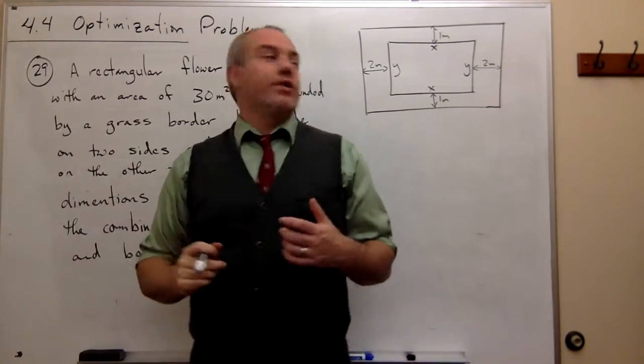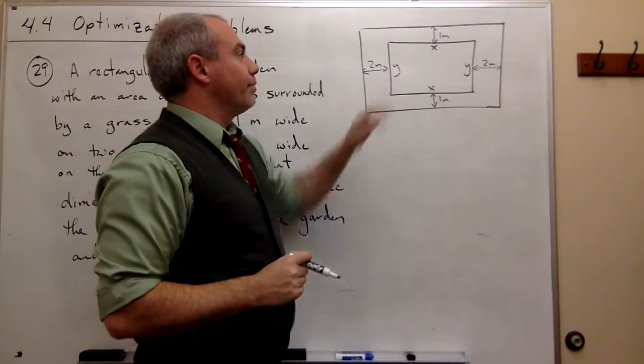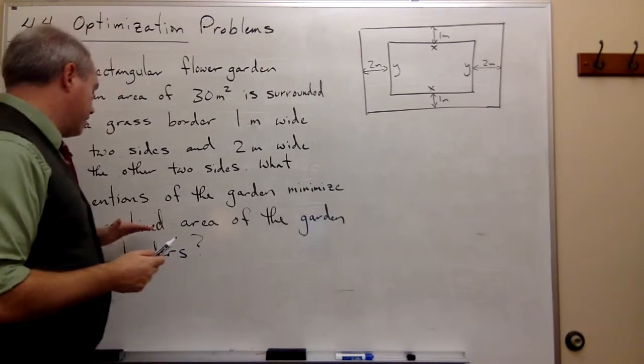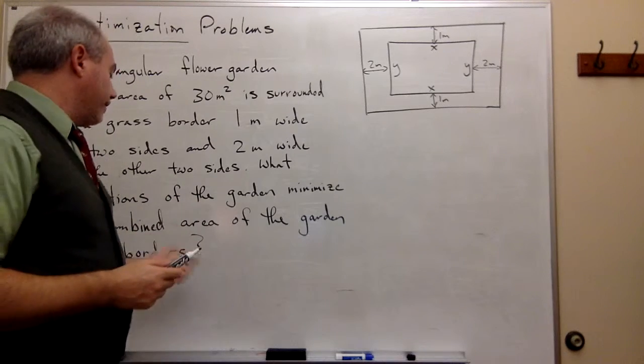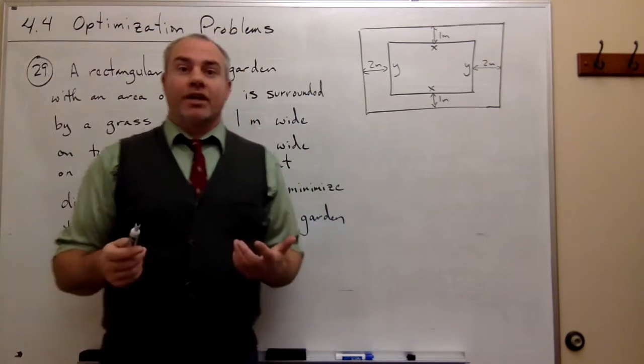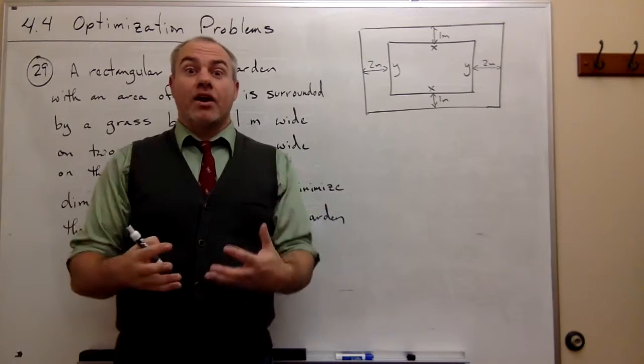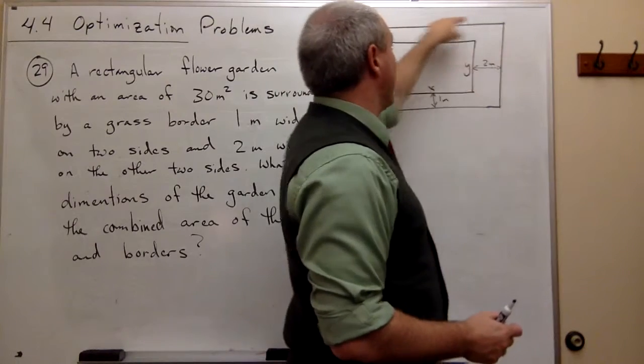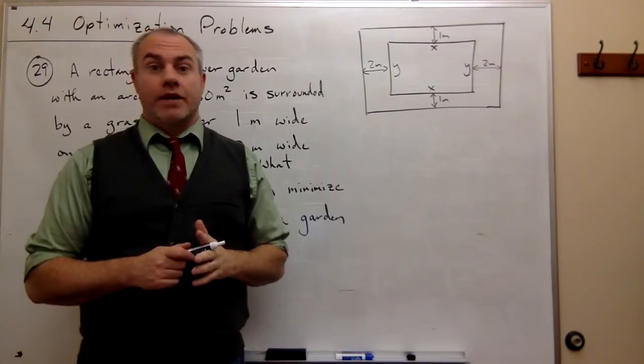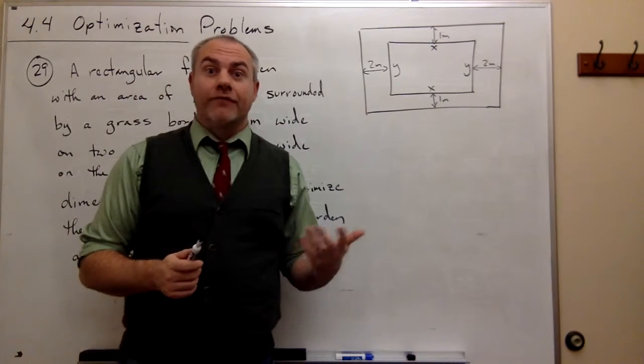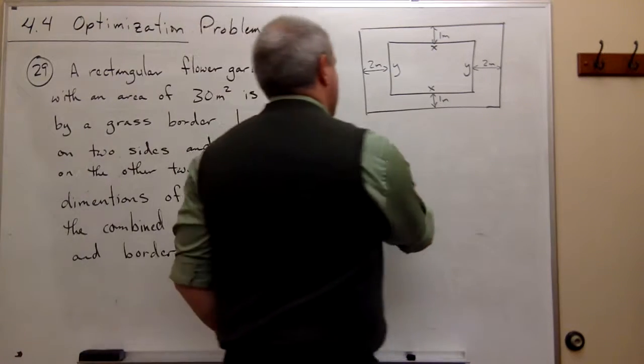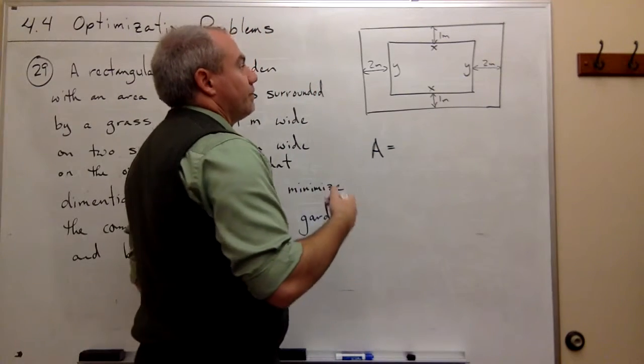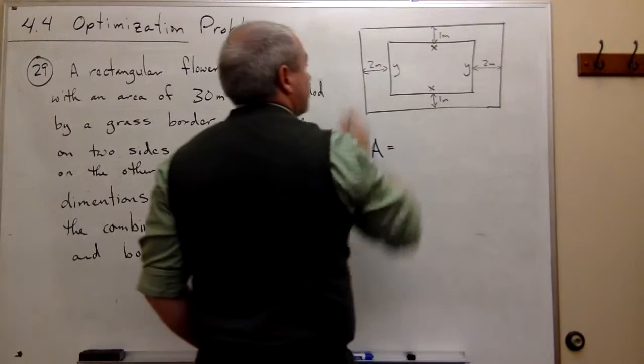Now that we've got our picture here, we've labeled some appropriate things. We need to figure out, we're trying to minimize the combined area of the garden and the borders. So we need a formula for the area of the garden plus the borders. In other words, we need a formula for the area of the big rectangle. It's the length times the width of the big rectangle.